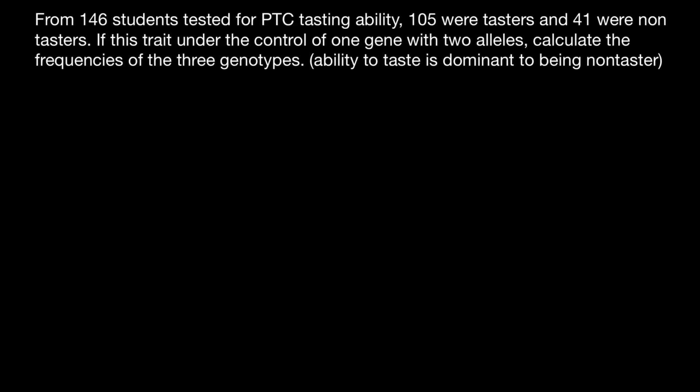Hello and welcome to Nicolai's Genetics Lessons. Today's problem: from 146 students tested for PTC testing ability, 105 were testers and 41 were non-testers. If this trait is under the control of one gene with two alleles, calculate the frequencies of the three genotypes. Ability to test is dominant to being a non-tester.